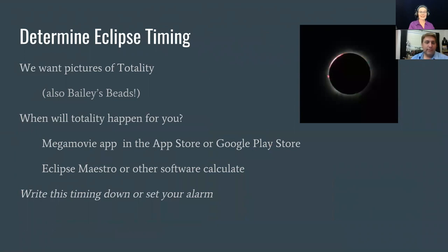The Mega Movie app is out and will help us determine the eclipse timing. We are only looking for pictures of totality, not the partial eclipse, for the movie or for the science. We want to know what the corona looks like. Some people are also interested in Bailey's beads, which happen just a few seconds before and after totality depending on where you are in the path. The Mega Movie app will give you all those times for wherever you happen to be.